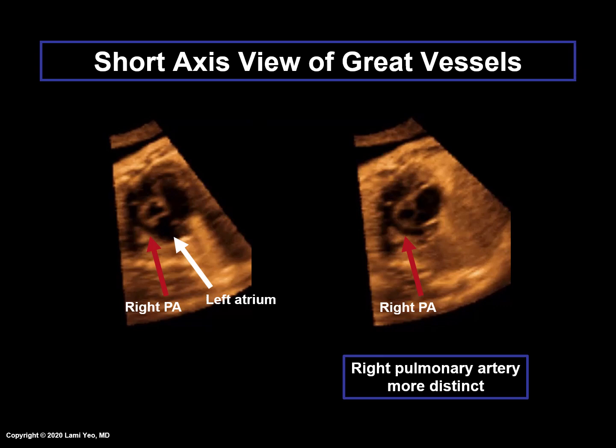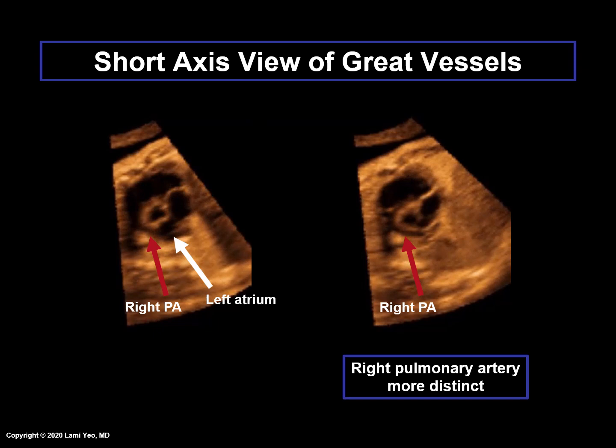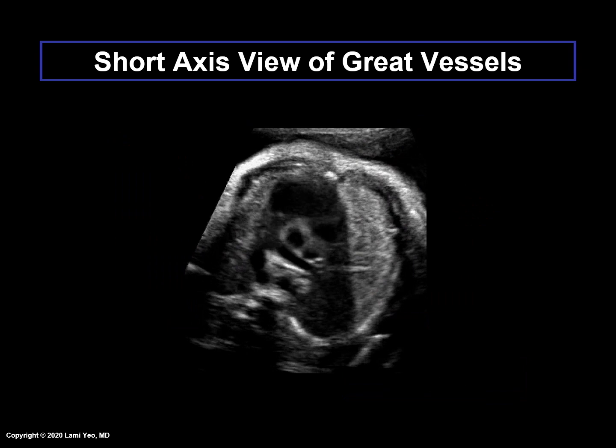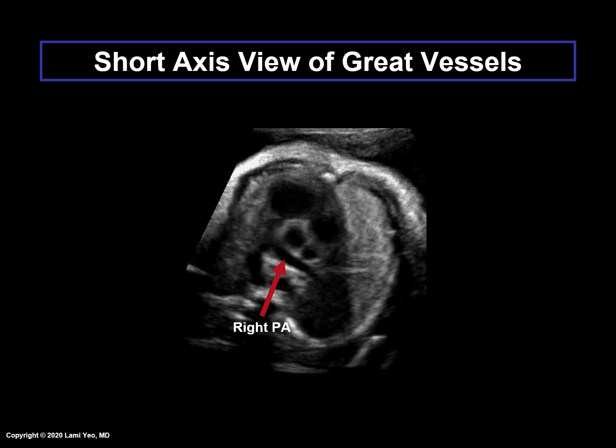Sometimes, in the short-axis view of the great vessels, depending upon the inclination of the transducer, the right pulmonary artery is more distinct, as shown by the red arrow, and the left atrium may not be visible well. Here is another example in which the right pulmonary artery is more distinct, as shown by the red arrow.